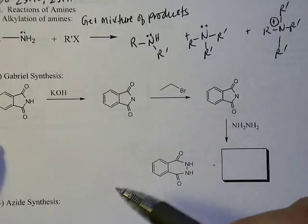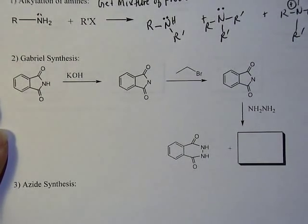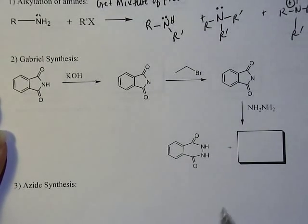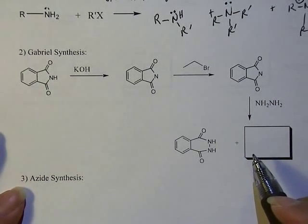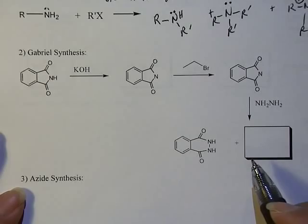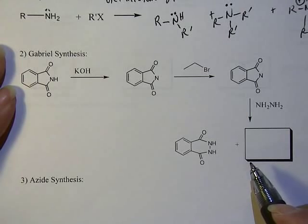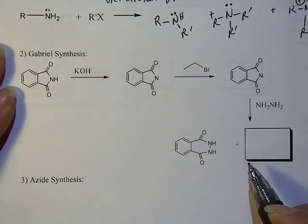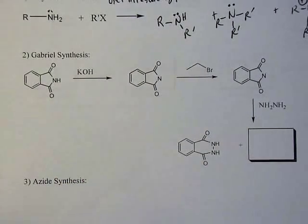In order to go around this problem, a couple of methods have been invented. One is called Gabriel synthesis. This and the azide synthesis, and another one called reductive amination—there's three methods to go around this problem. In Gabriel synthesis, you're starting out with this starting material called phthalimide.